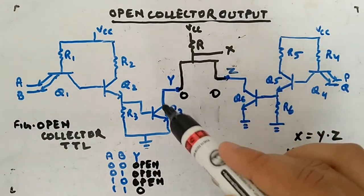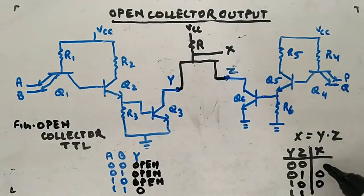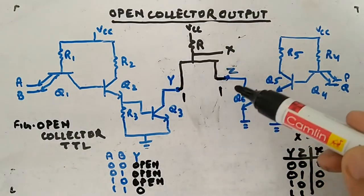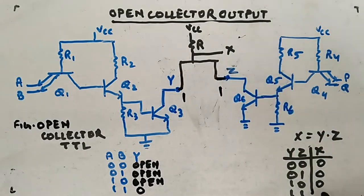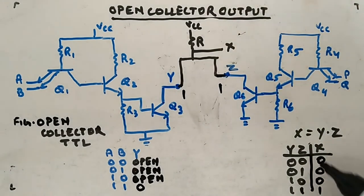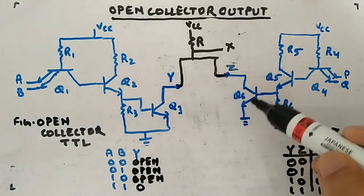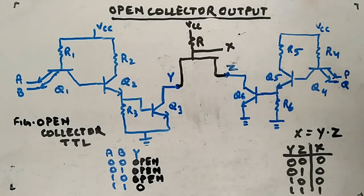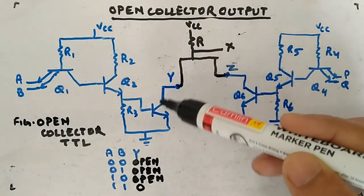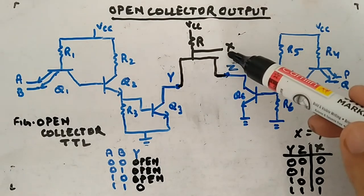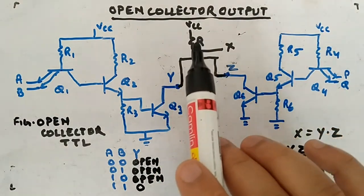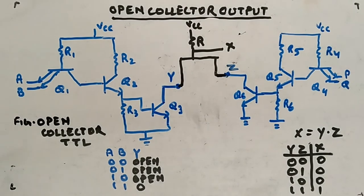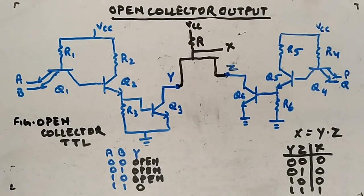But when both outputs are 1 — both are open — neither transistor is connected, so X is not pulled to ground from either side. X is only connected to VCC through the pull-up resistor, so the output is high. This is how it implements an AND gate — a wired-AND. When both open collector outputs are 1 (open), X floats up to VCC, giving logic 1. This is how we achieve wire-ANDing of two TTL circuits using open collector output.